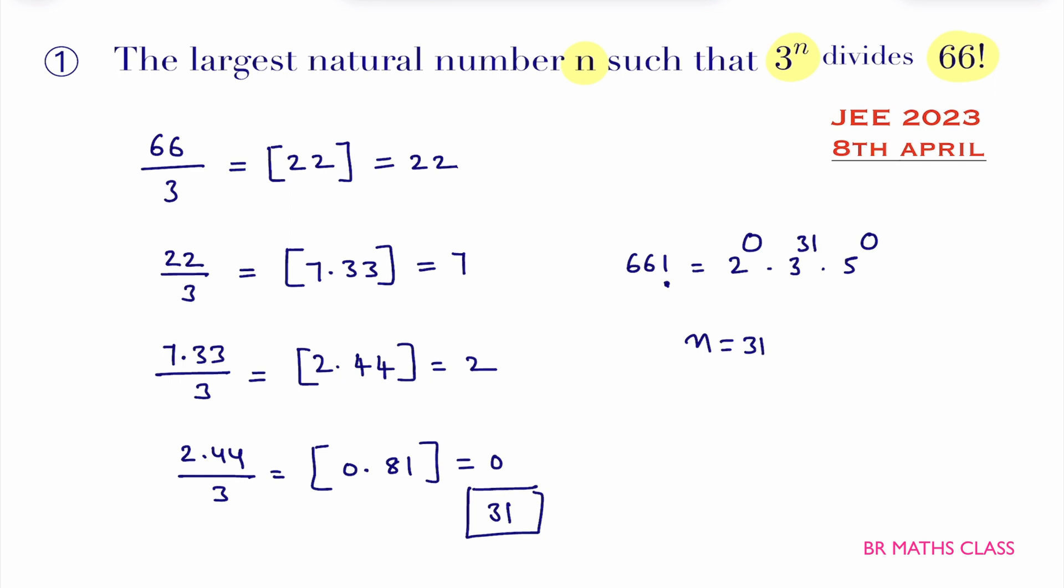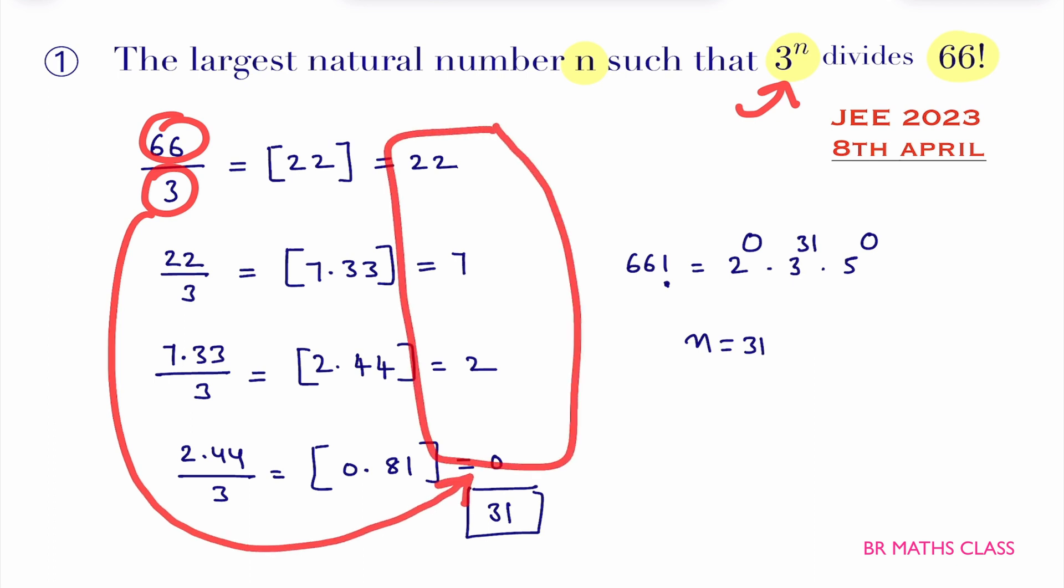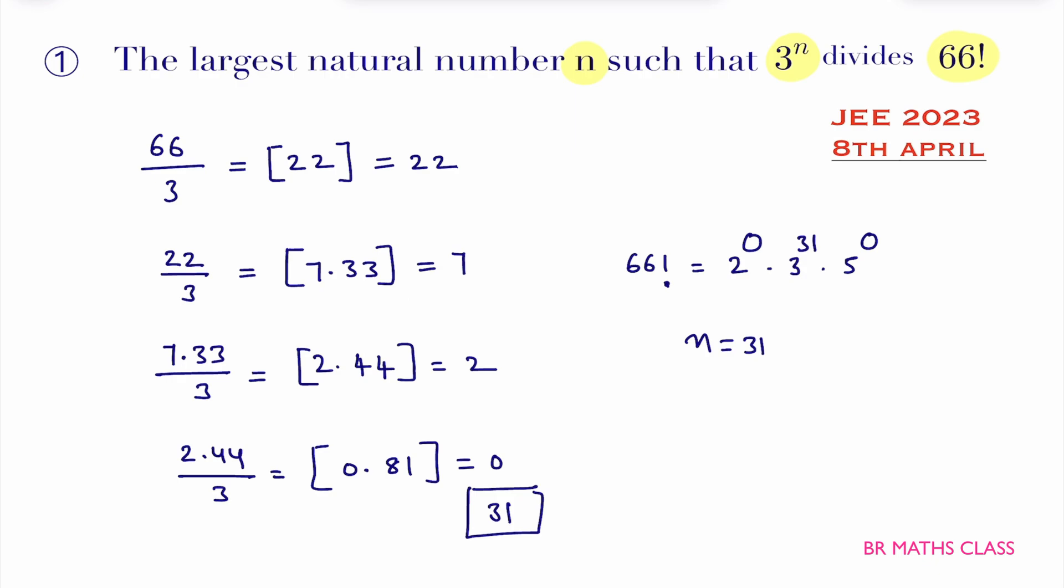Not only 3^n. If they are asking to find largest natural number n such that 2^n divide 66 factorial, that also we can calculate. Procedure is same. What we will do? If you want to calculate 2^n divide 66 factorial, you divide 66 with 2 and you continue this procedure until you will get 0. Later you add all these things. What number you will get, that is the answer.